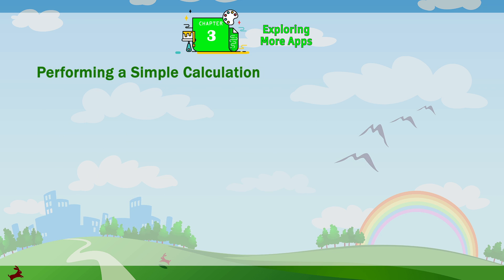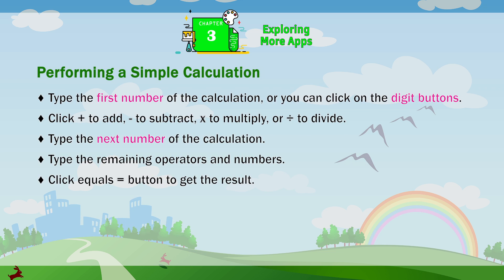Performing a Simple Calculation. Type the first number of the calculation or click on the digit buttons. Click to add, subtract, multiply, or divide. Type the next number of the calculation, then type the remaining operators and numbers. Click the Equals button to get the result.